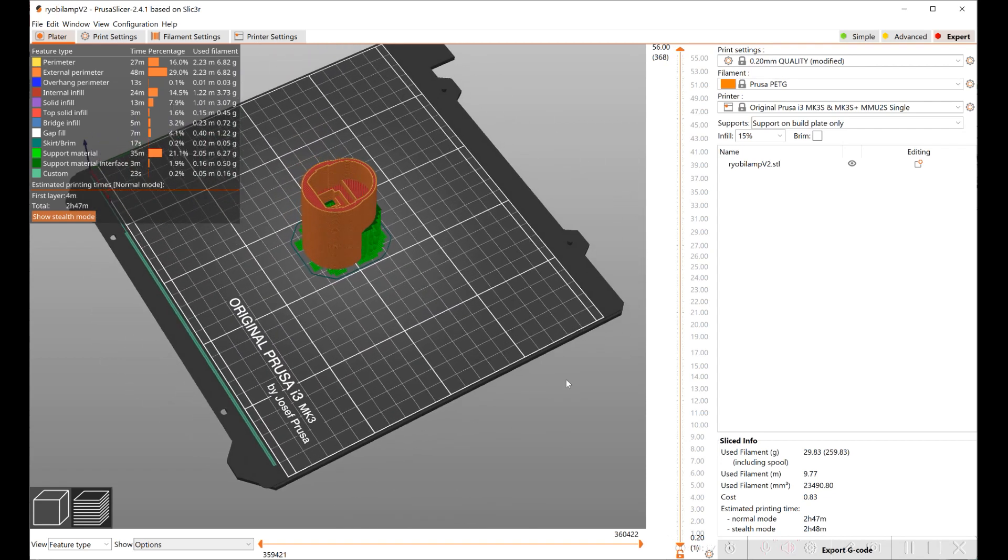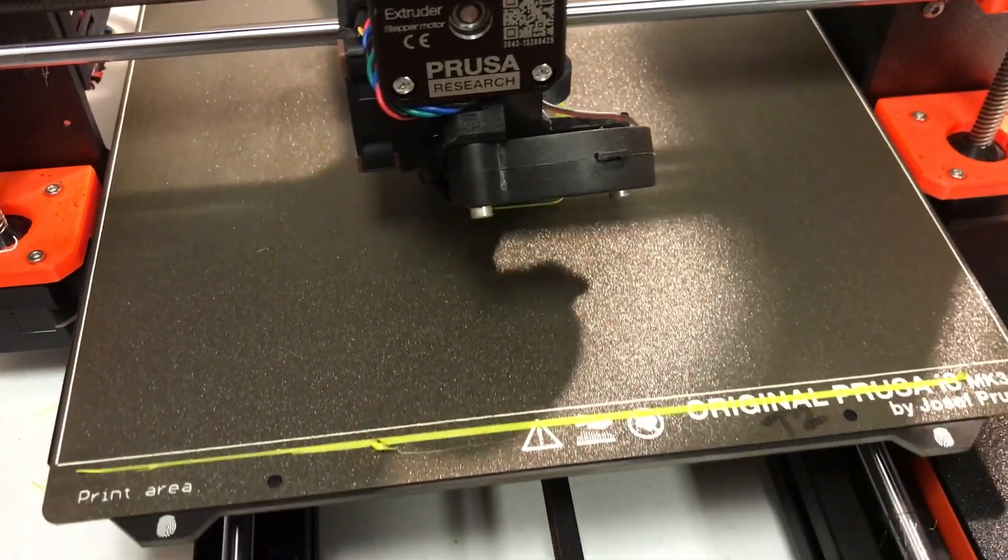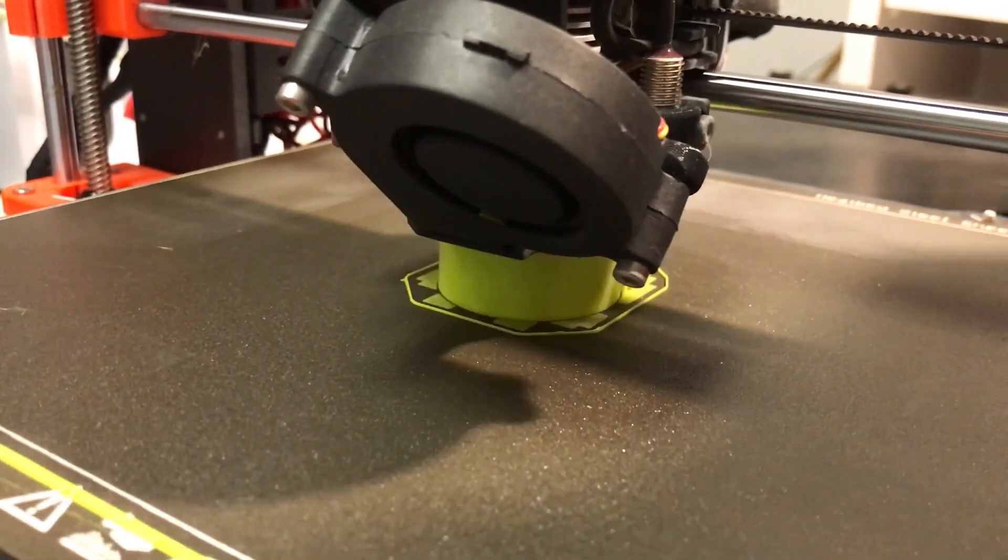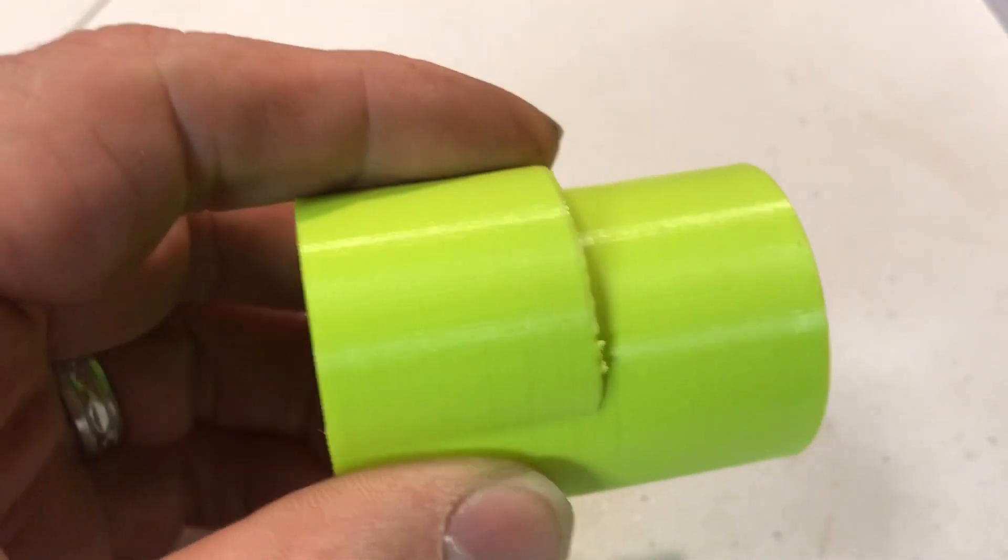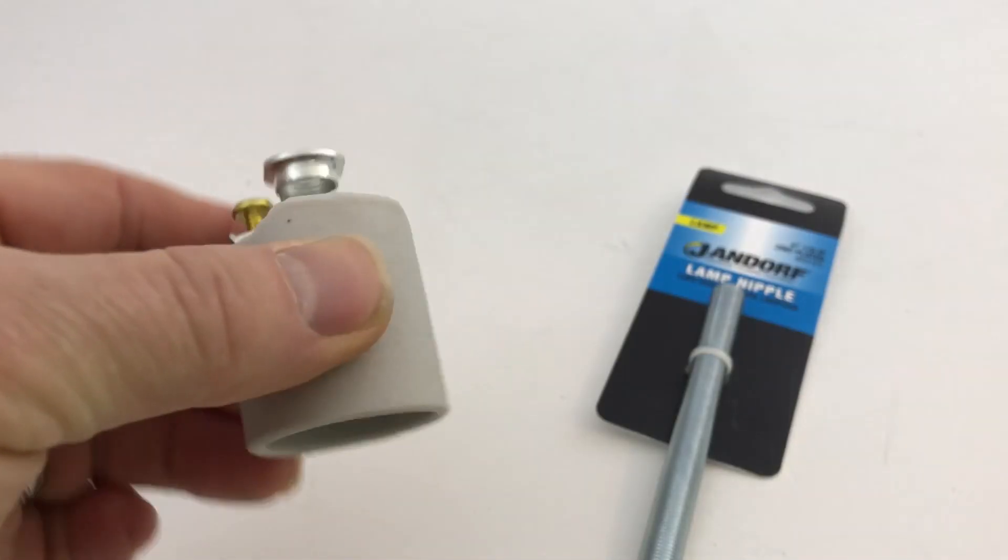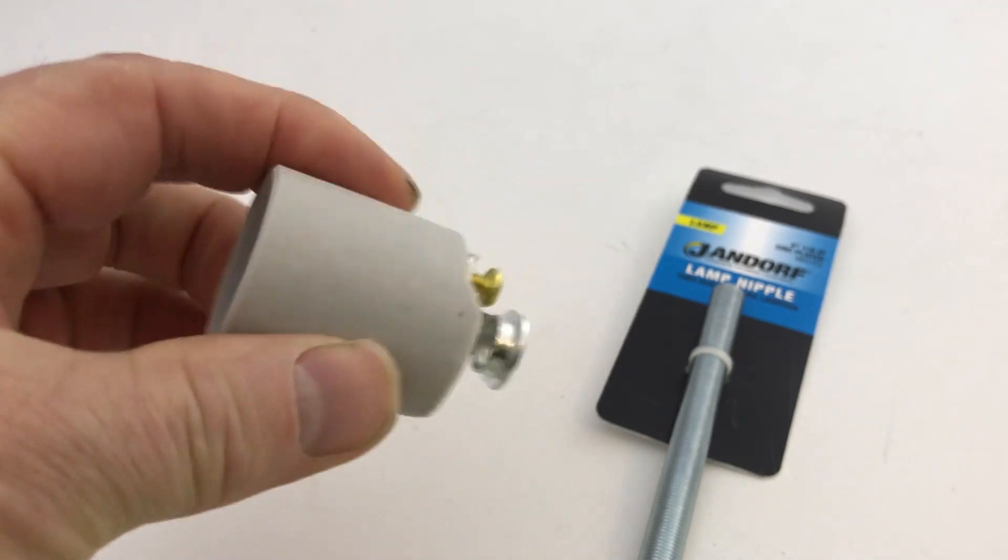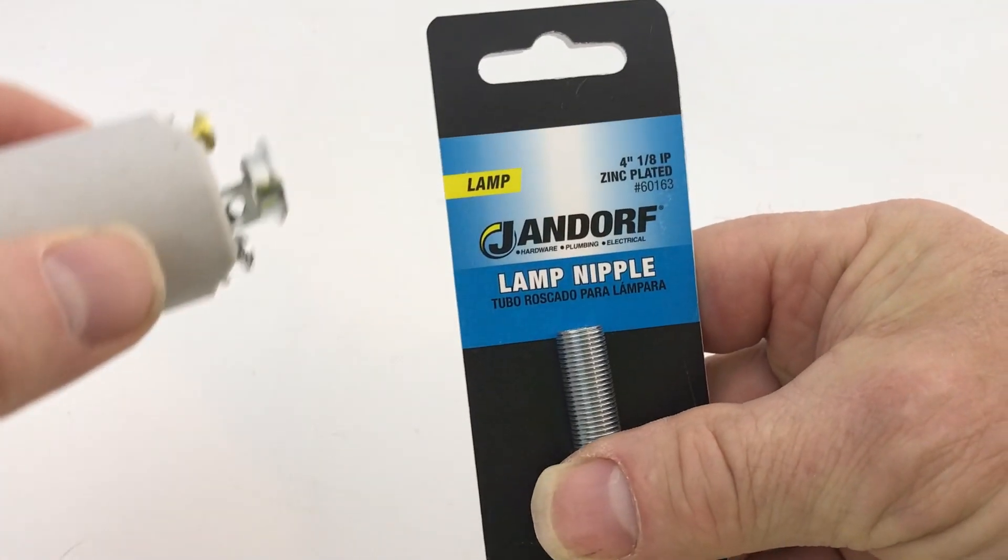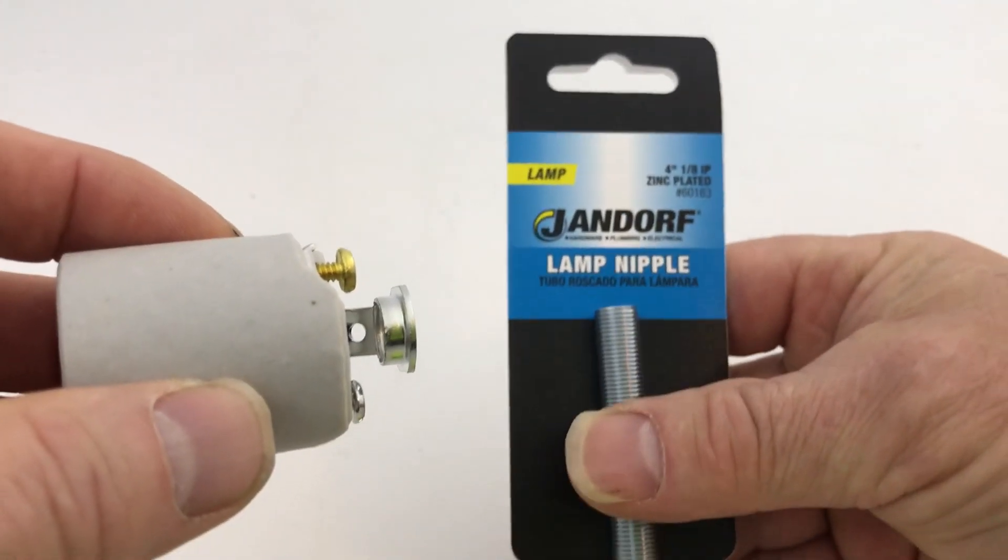It seems to work okay. Here I've removed the support, so this is just a ceramic light socket that you can get from the hardware store, and normally you would use it with a 1 1/8 inch IP thread to mount to a lamp or something.